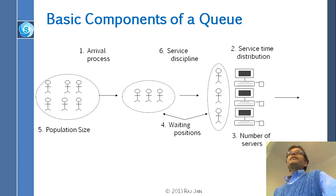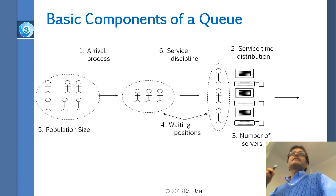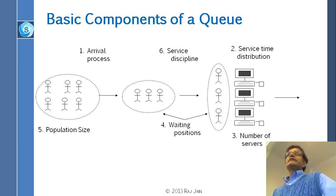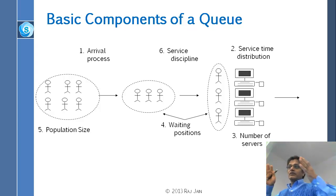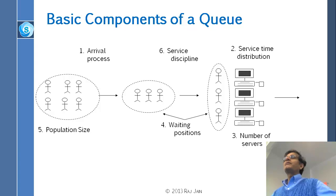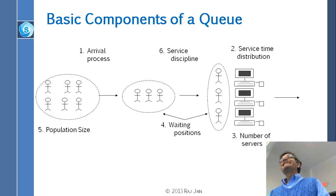All of this applies to computer systems, because everywhere in computer systems we have more than one process running. We have processes queued at the CPU, queued at the disk, queued in the network — so many queues everywhere that we need to analyze all of this. The important thing is finite buffer size. In computers and the real world, if the number of jobs wanting a resource exceeds some amount, we just drop them.